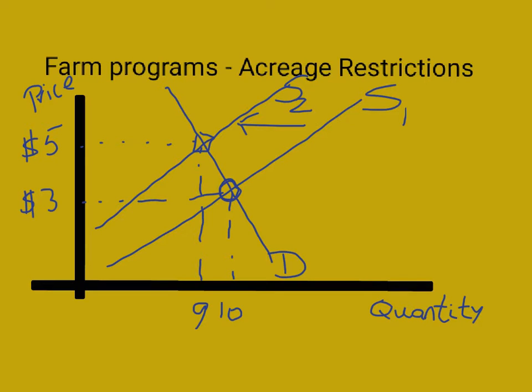This program definitely helps struggling farmers. However, the disadvantages are, first of all, that the government has to pay for each acre that farmers leave idle, so taxes will go up. And then the other thing is, as you can see, the equilibrium price of the agricultural product will increase, so consumers are going to pay a higher price for their products.